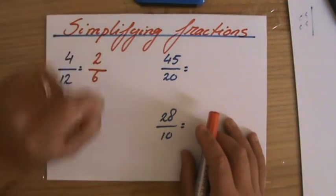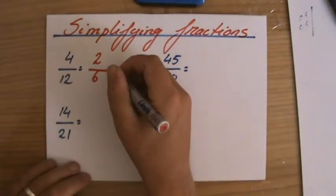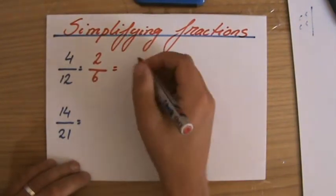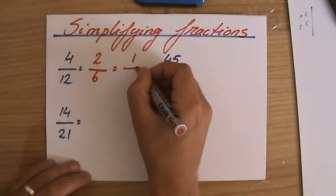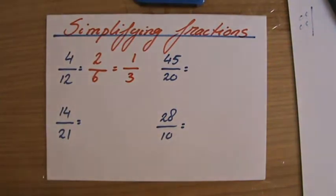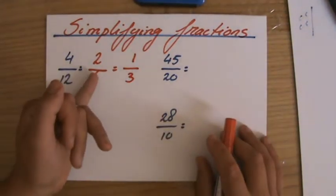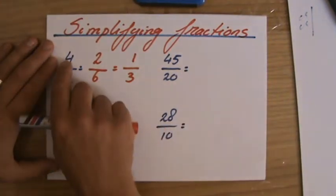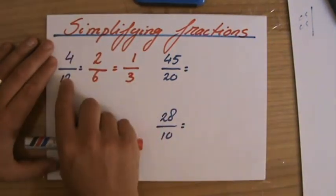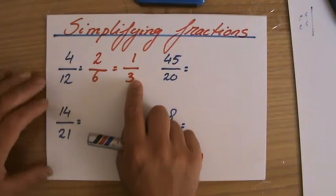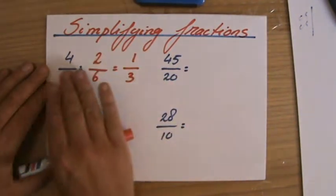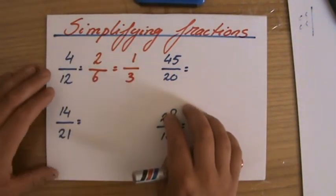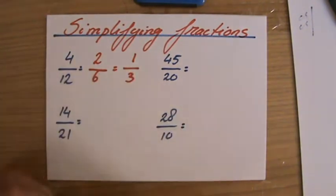However, it's not the simplest form yet, because 2 and 6, again, I can divide both by 2, so 1 over 3. So I've done it in two steps. But perhaps you're a little bit smarter than I am and you saw, well, I can divide 4 by 4 and 12 by 4, and you get there in one go. But there's no reason why you have to be able to do it in one step. You can do that step by step like I do as well.